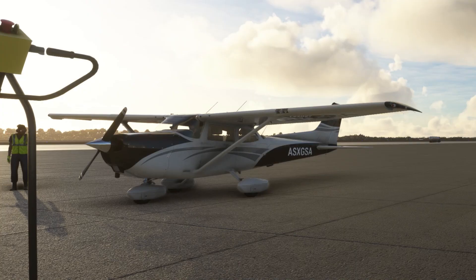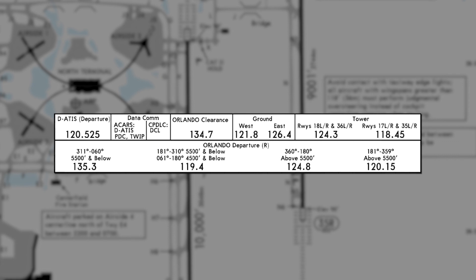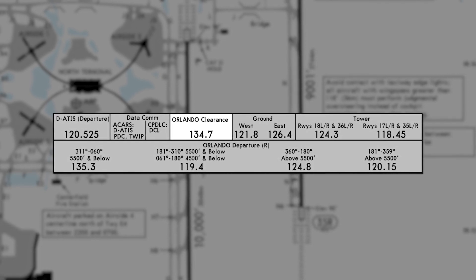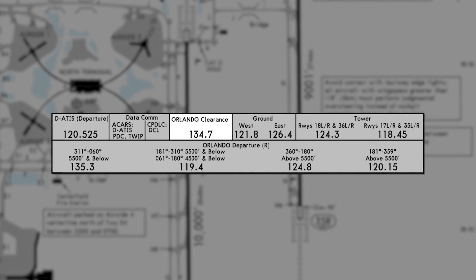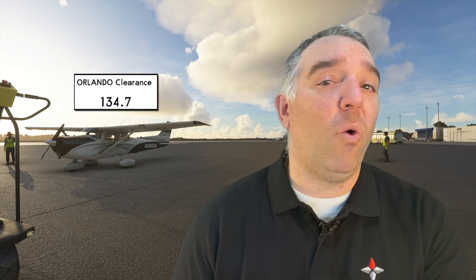So we know what the airport has in terms of data link communications, but we're in an old Cessna 172 — we don't have that available. We're going to do it old school and actually call Orlando Clearance. Looking at number three on our chart, Orlando Clearance is on 134.7. We're going to ask for clearance out of the Class Bravo airspace to fly south and head over to Key West.